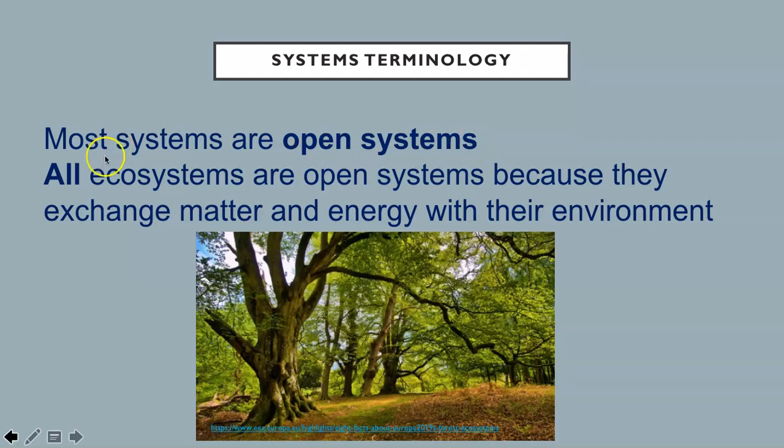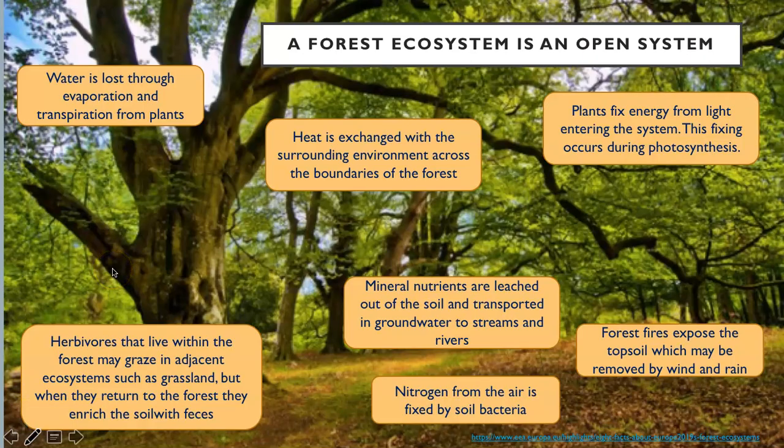Most systems are open systems. All ecosystems are open systems because they exchange matter and energy with their environment. Let's look at some of the flows in and out of this forest ecosystem. Water is lost through evaporation and transpiration from plants. Heat is exchanged with the surrounding environment across the boundaries of the forest. Plants fix energy from light entering the system. This fixing occurs during photosynthesis. Forest fires expose the topsoil which may be removed by wind and rain. Mineral nutrients are leached out of the soil and transported in groundwater to streams and rivers. Nitrogen from the air is fixed by soil bacteria. Herbivores that live within the forest may graze in adjacent ecosystems such as grassland, but when they return to the forest they enrich the soil with feces. These are just some of the flows that occur in this ecosystem.